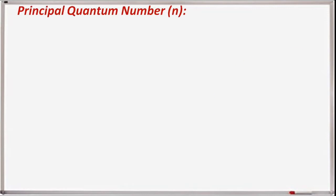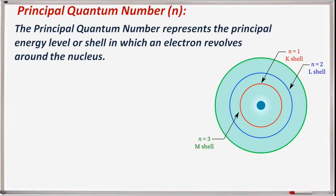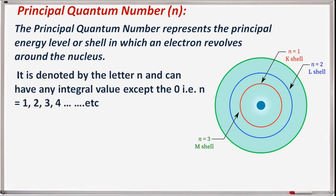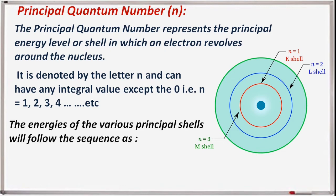The principal quantum number, n, represents the principal energy level or shell in which an electron revolves around the nucleus. It is denoted by the letter n and can have any integral value except zero — n equals 1, 2, 3, 4, etc. The energies of the various principal shells follow the sequence K, L, M, N, O in increasing order of energy, corresponding to the first, second, third, fourth, and fifth orbits.